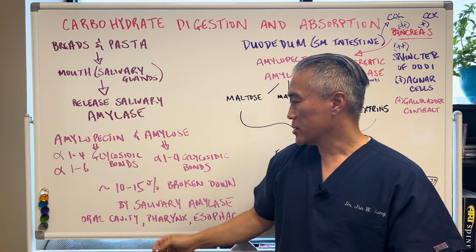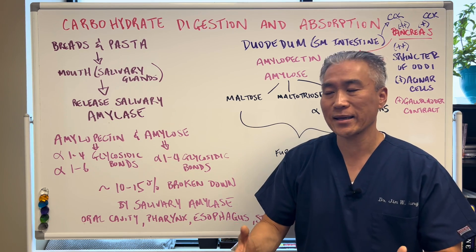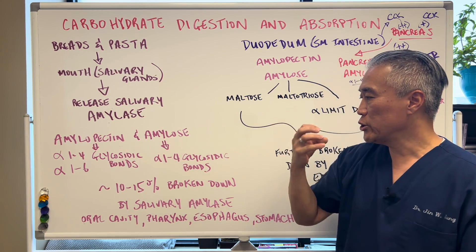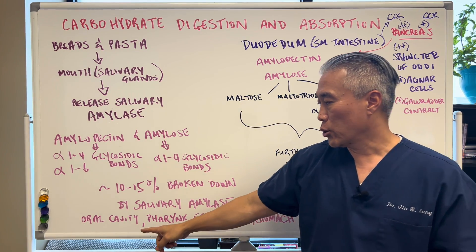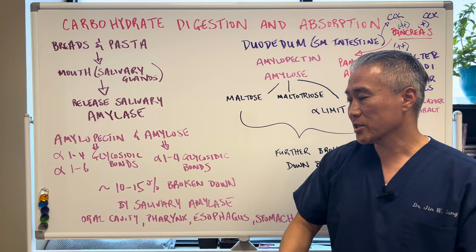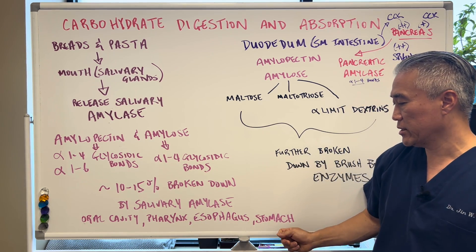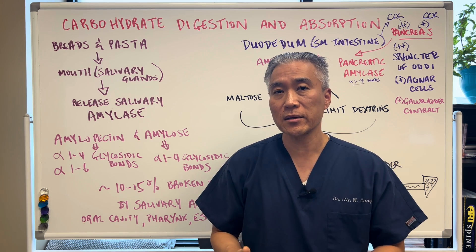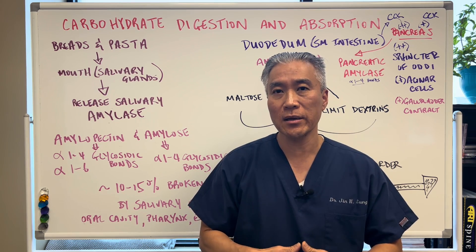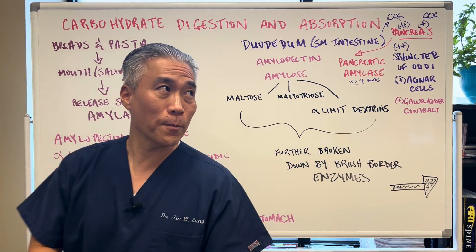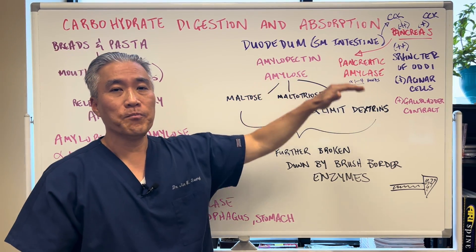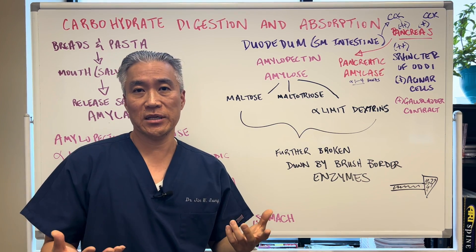When you eat, about 10 to 15% of the process of breaking down the carbohydrate occurs due to salivary amylase. Basically you start to chew, your oral cavity where the amylase is produced starts to break it down, and the process continues into the pharynx, esophagus, and into the stomach. Once it hits the stomach, the amylase becomes deactivated and has less effect due to the acidity.